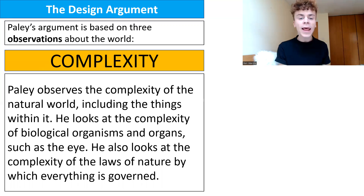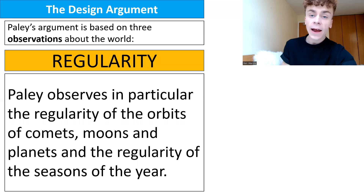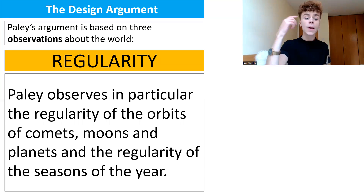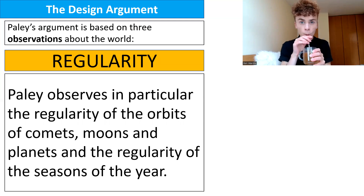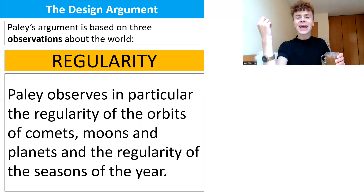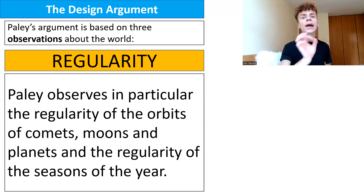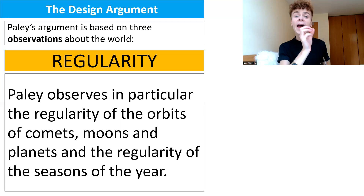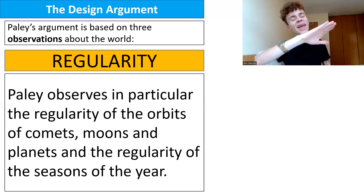He also observes regularity — in particular the regularity of the orbits of comets, moons, and planets, and the regularity of the seasons of the year. He gets his telescope out and sees how every planet orbits the sun with such precision in its annual routine. And then closer to home, the four seasons happen every single year — they work like clockwork.